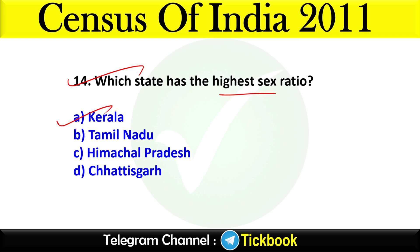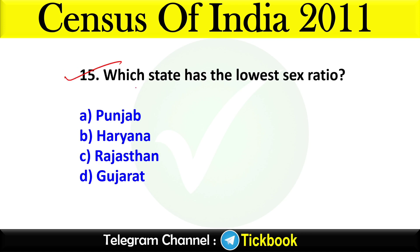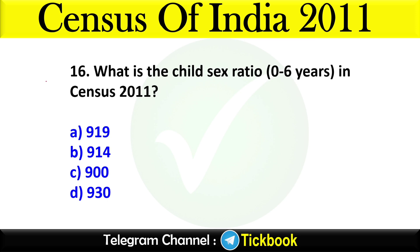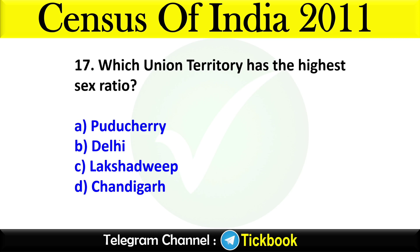Question fourteen: Which state has the highest sex ratio? Option number A: Kerala. Question fifteen: Which state has the lowest sex ratio? Option number B: Haryana. Question sixteen: What is the child sex ratio in Census 2011? Option number A: 919. Question seventeen: Which union territory has the highest sex ratio? Option number A: Puducherry.